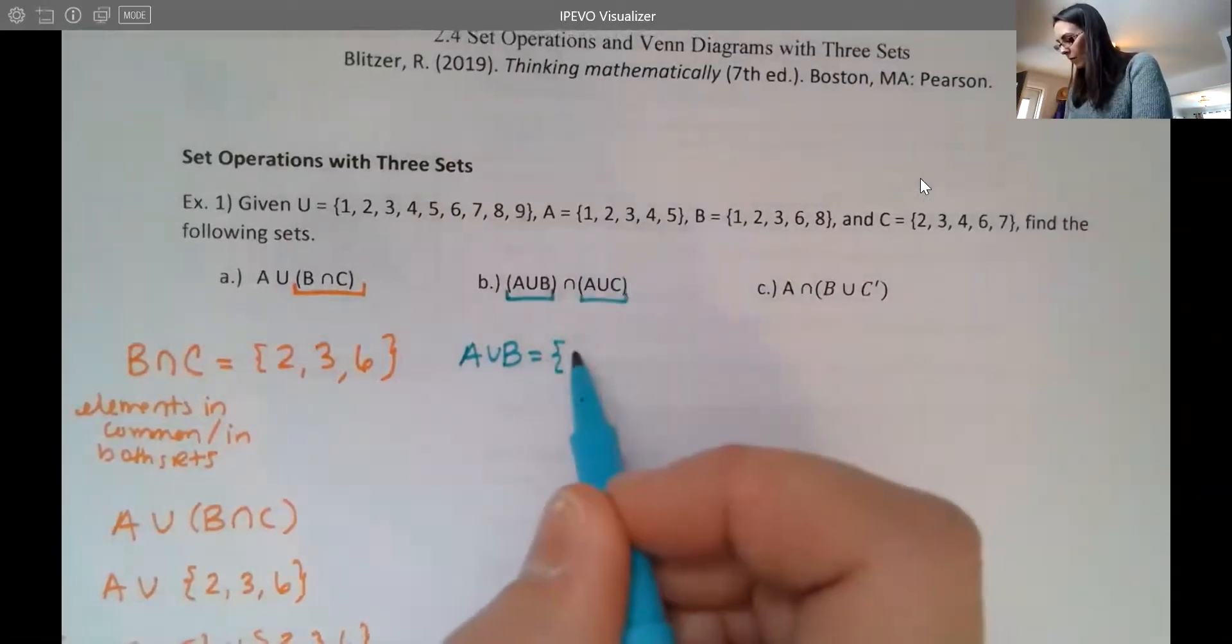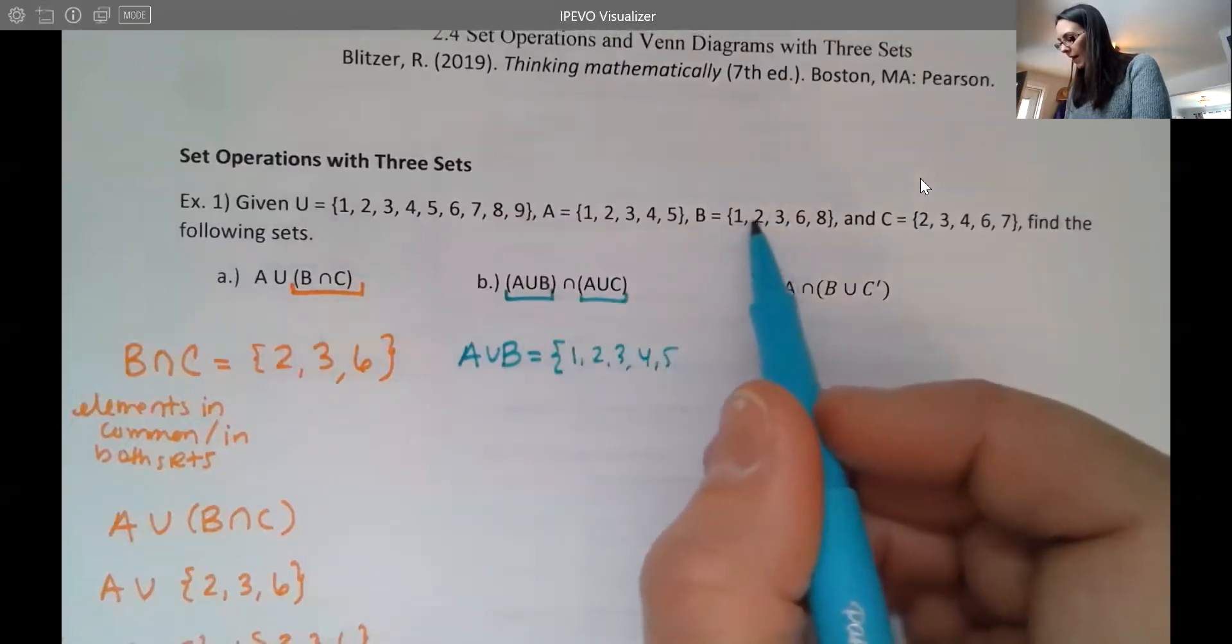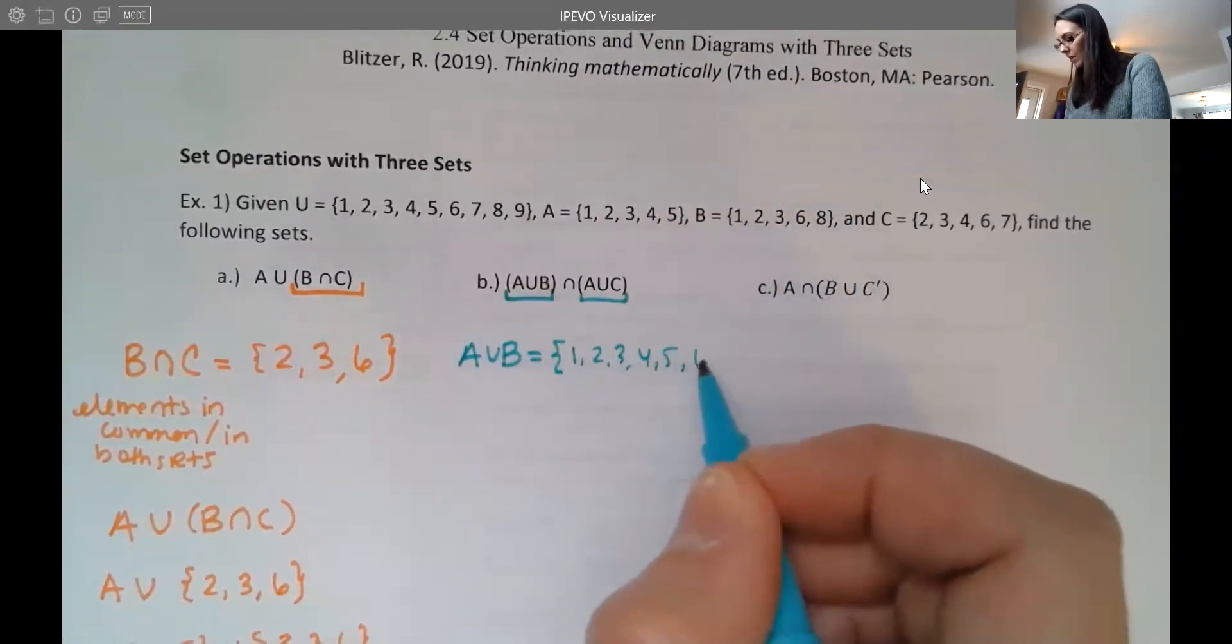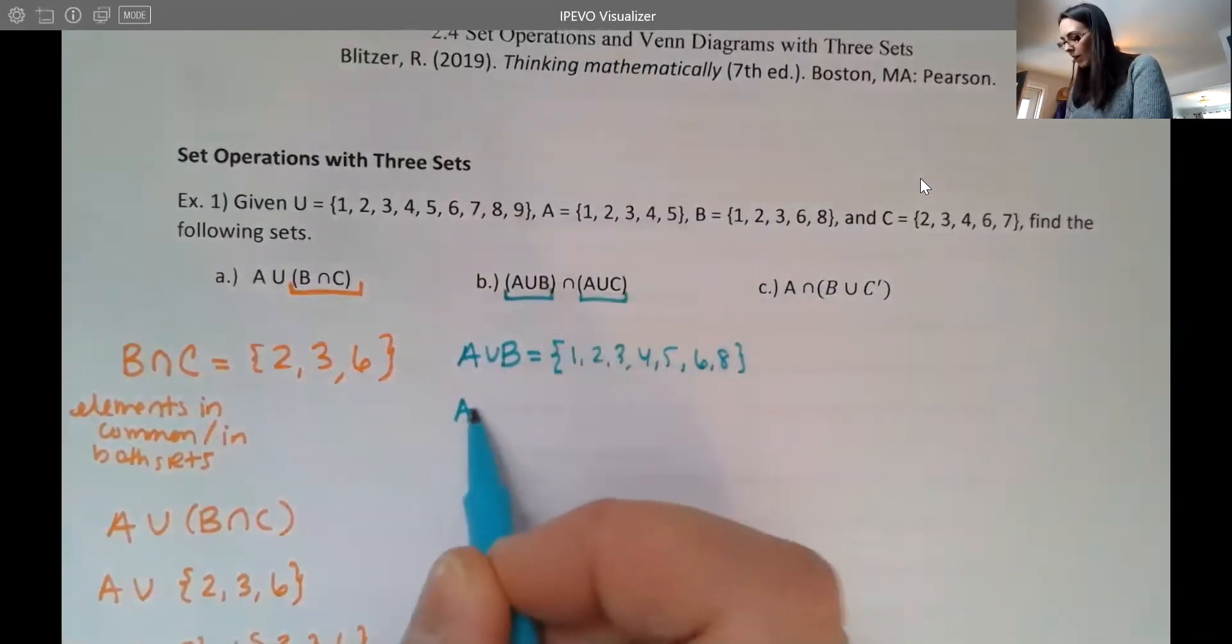So I have one, two, three, four, five. And then from B, I have one, two, three, then I also have six and eight.